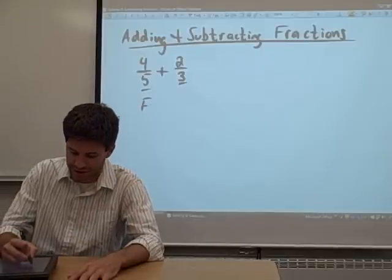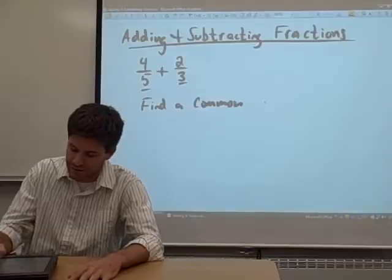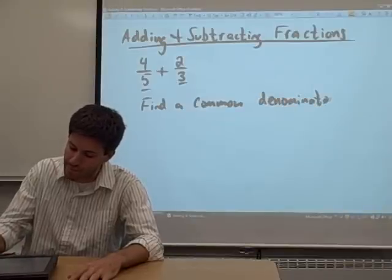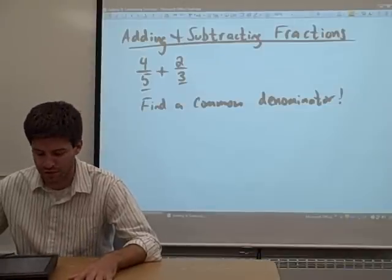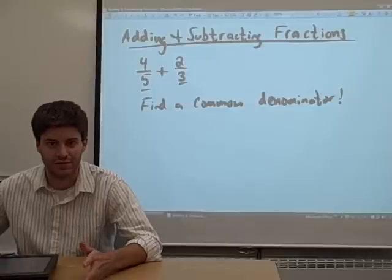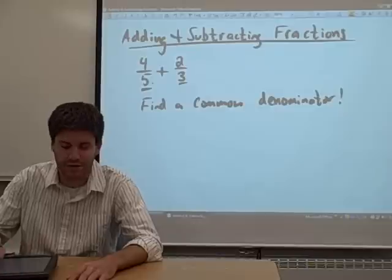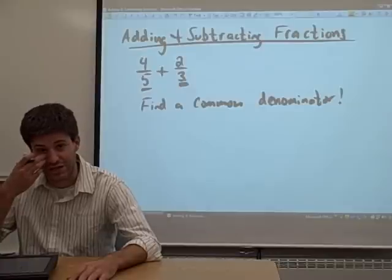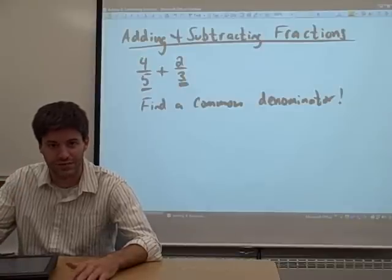So we want to find a common denominator. We want to get these fractions in a form where they both have the same denominator. And the question is, how can we do this? The denominator on the left fraction is a 5, the denominator on the right fraction is a 3. How could we possibly get those denominators to be the same?